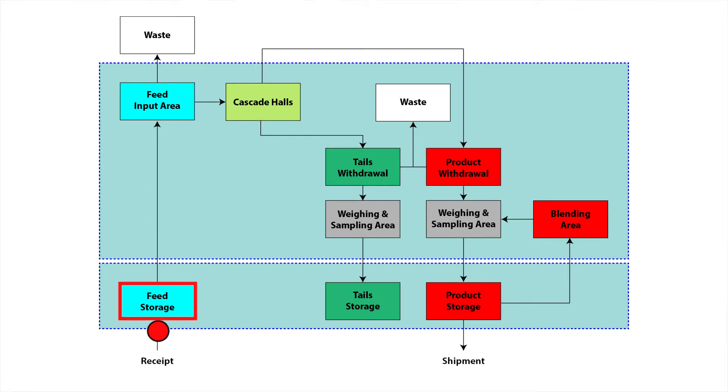The UF6, as it is stored, is in a solid, crystalline form. This form is easy to handle and weigh. After it enters the feed input area, it will generally be heated to a gas state and be fed into the cascades.